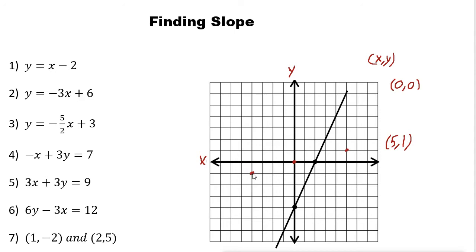For another point, you move 1, 2, 3, 4 units to the left, so X is negative 4, and 1 unit down means Y is negative 1. These two numbers show the address of the point.